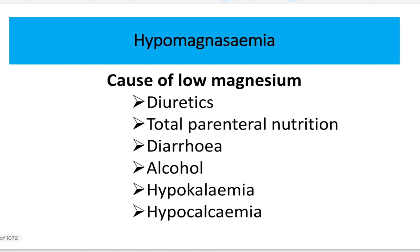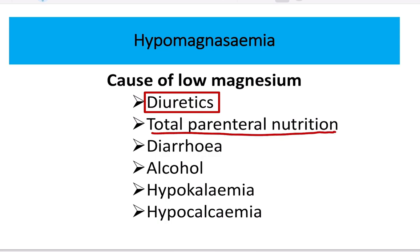The causes of hypomagnesemia — low magnesium — include, first of all, diuretics. Different types of diuretics cause electrolyte imbalance, including a decrease in magnesium. Also, total parenteral nutrition: in cases of TPN, magnesium is often not supplied, so magnesium levels may decrease.